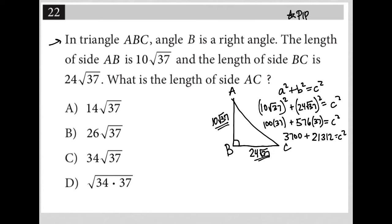Combine everything on the left-hand side, so 3,700 plus 21,312 is 25,012. So 25,012 equals C squared.